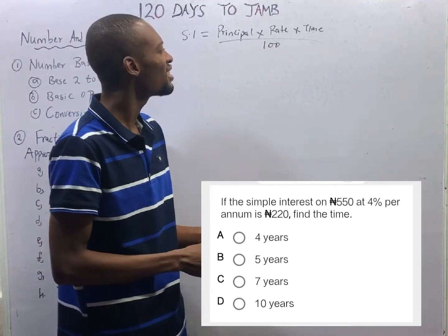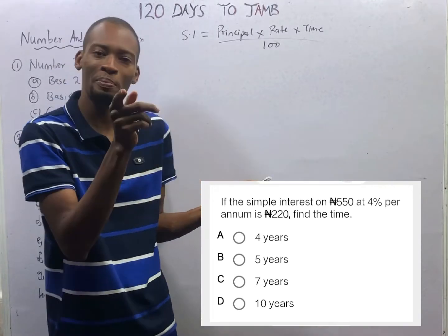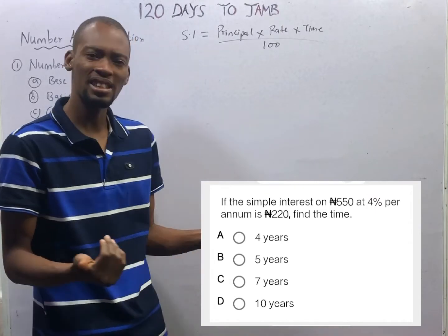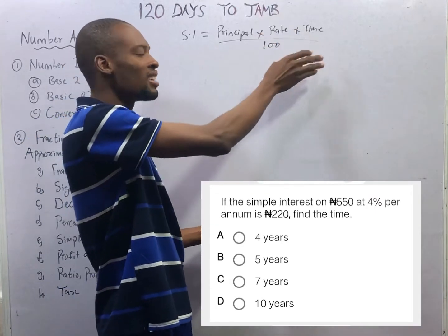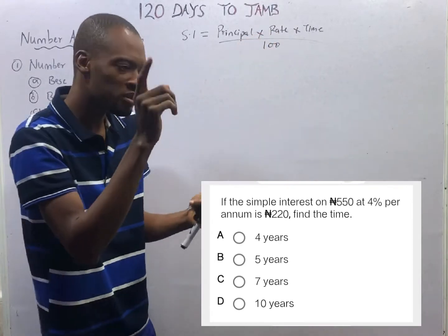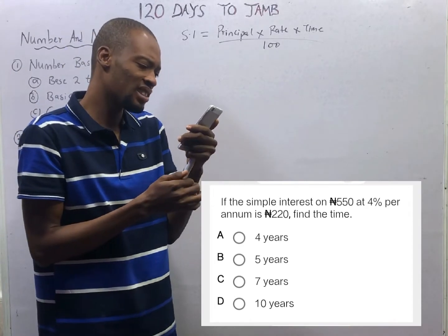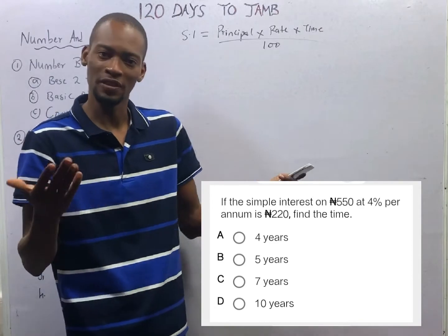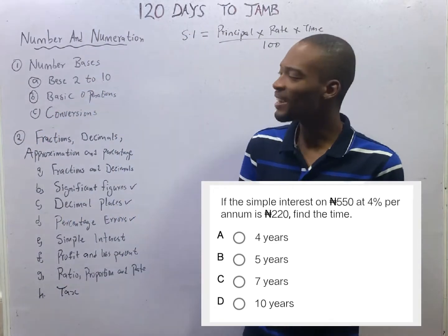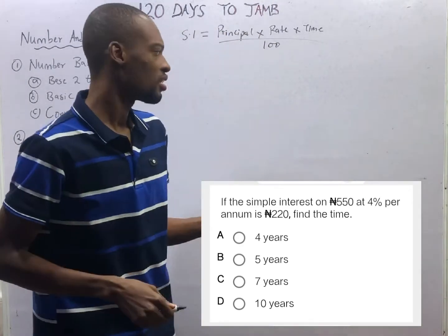What is rate? Rate is the interest percentage. When you are given simple interest questions, anytime you see a number followed by a percentage sign, that shows the rate. When writing the rate, you need not write 'over 100' again, because this 100 in the formula compensates for the rate — just write only the number before the percentage. Time can be given in years, months, or days. For simple interest questions, we usually calculate time in years.